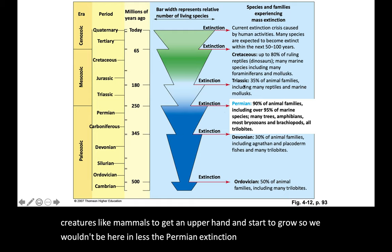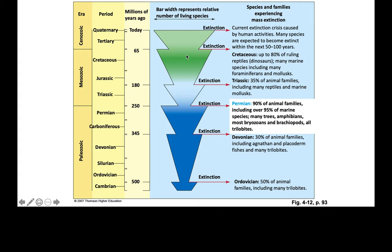The mid-Triassic — we actually lost a lot of things. This was a period in which it rained for about 2 million years, solid, every single day, torrentially, we think. Which is, again, pretty crazy.